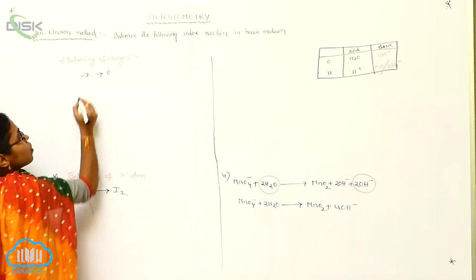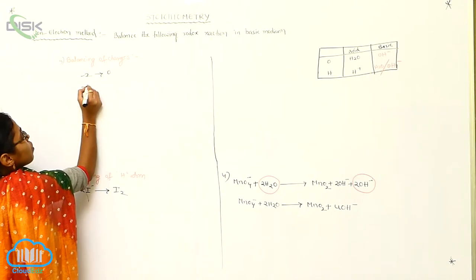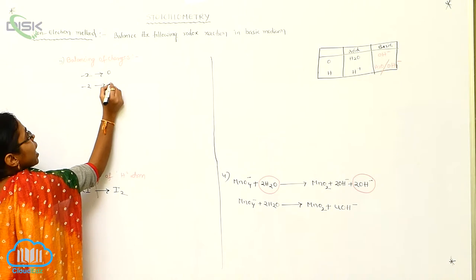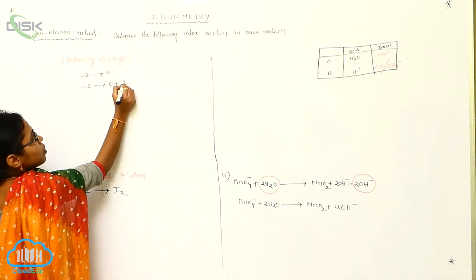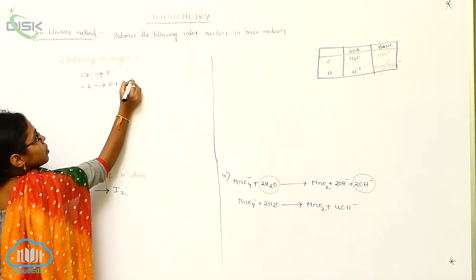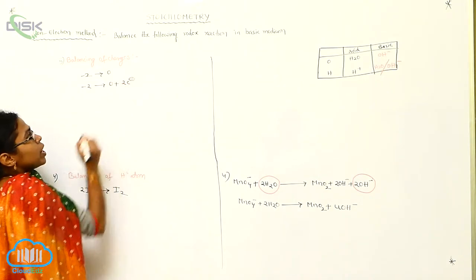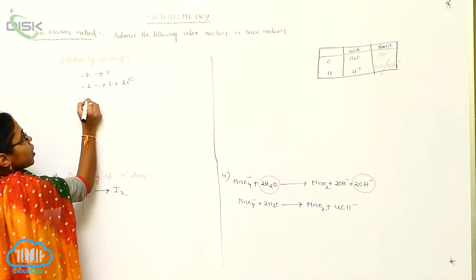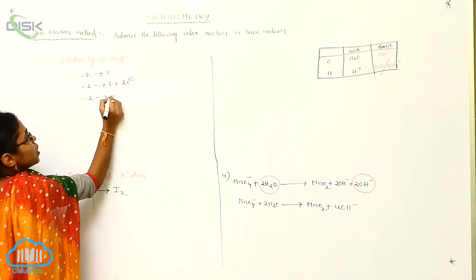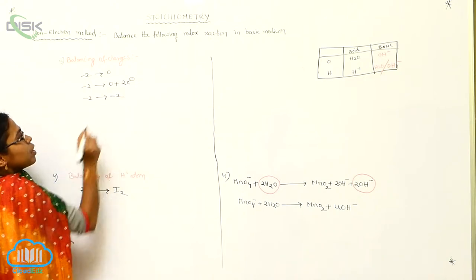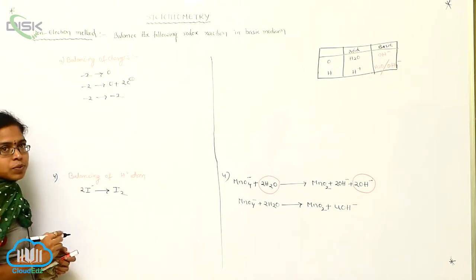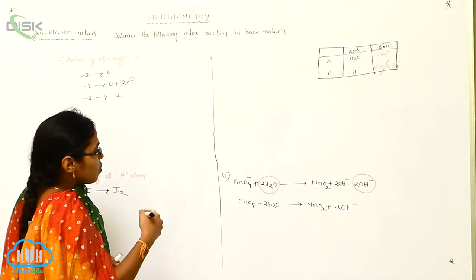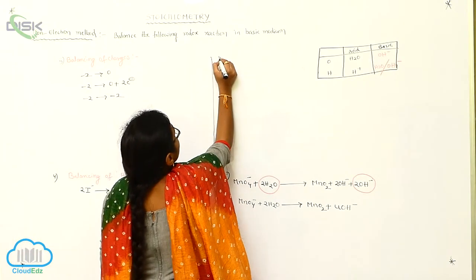So for the balancing of this one: minus two on the left, I can add on the right side zero plus two electrons. So then you can write minus two equals zero plus minus two — that is, minus two is balanced.